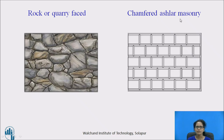Next we have chamfered ashlar masonry. In this type, finely chisel-shaped stones are laid, a 25 mm wide strip is used along the perimeter of the stones, and the stones are beveled at an angle of 45 degrees.